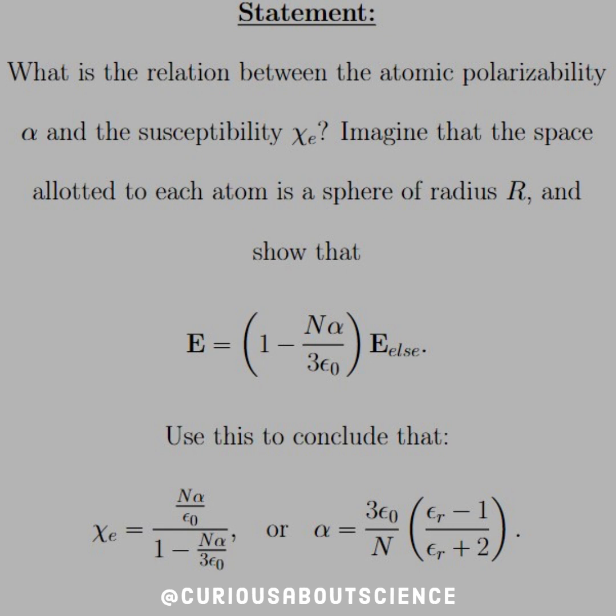So the statement reads: what is the relation between the atomic polarizability α and the susceptibility χₑ? Imagine that the space allotted to each atom is a sphere of radius R and show that the electric field E equals (1 - Nα/3ε₀) times E_else.